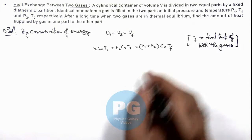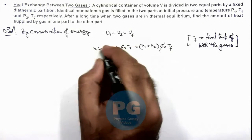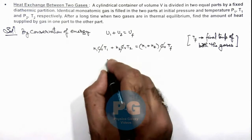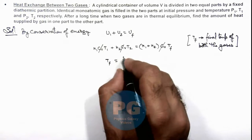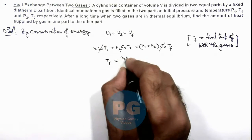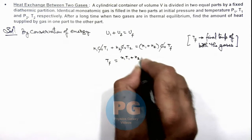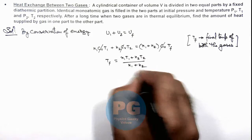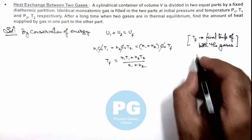In this situation, Cᵥ gets cancelled out as both are monoatomic gases. On simplifying we'll get the final temperature of the gases which is T_f = (n₁T₁ + n₂T₂)/(n₁ + n₂). Here for number of moles we can use gas law.